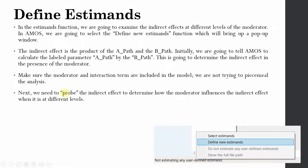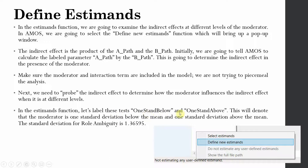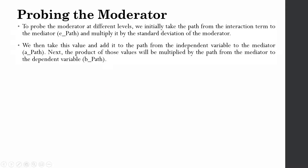Once we know the indirect effect, the next step is to probe the indirect effect to determine how the moderator influences it at different levels. The first step is to get the indirect effect; the second step is probing the indirect effect through the moderator. In the estimates function, we label one standard deviation below as the low level of the moderator and one standard deviation above as the high level. We will need the standard deviation of your moderator — in this case, role ambiguity has a standard deviation of 1.36595.